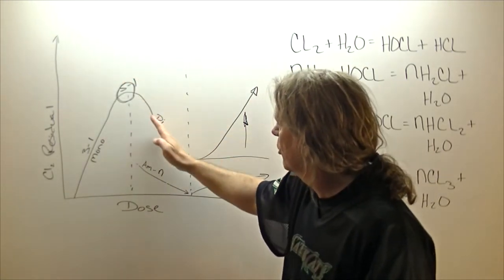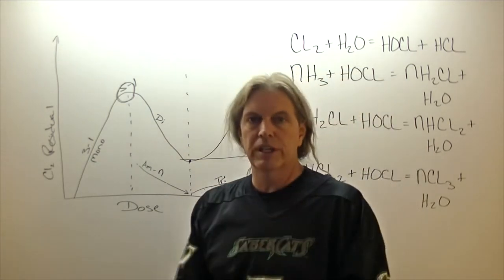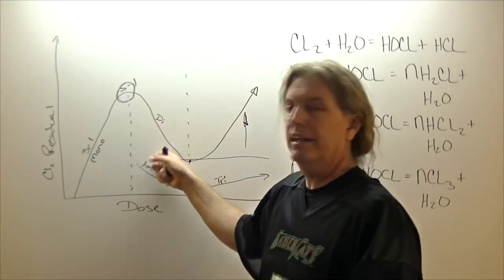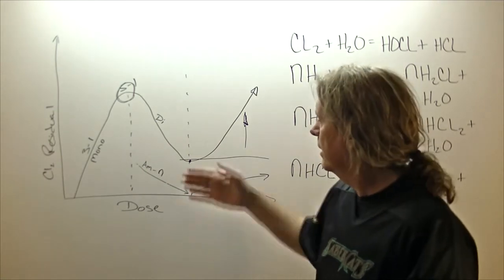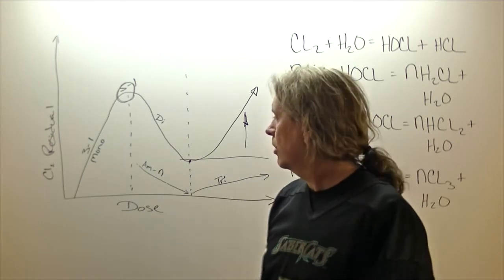After you pass that, you start forming your dichloramines and your trichloramines as your ratio gets higher, 6 to 1, 7 to 1, 8 to 1, 9 to 1, and again, much weaker disinfectants. Not only that, but taste and odor problems.